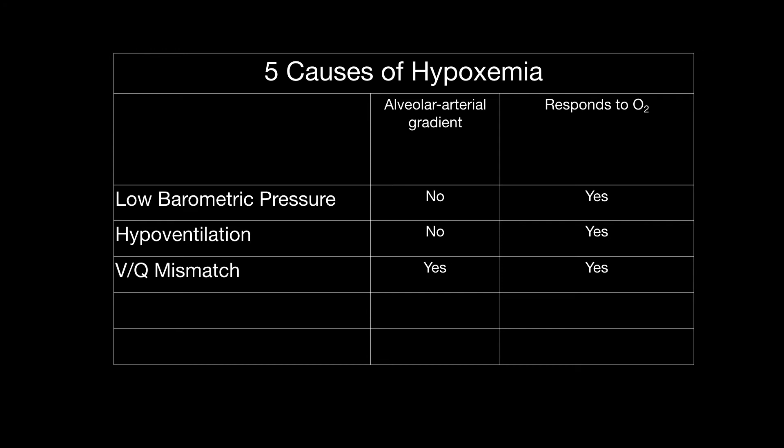The third cause of hypoxemia is VQ mismatch, and this is by far the most common cause of hypoxemia we see in the ICU. The problem with VQ mismatch is at the alveolar capillary unit: you have more blood flow crossing the unit than you have ventilation. Because of this, the blood enters the alveolar capillary unit hypoxemic and leaves still hypoxemic. But it will respond to oxygen because increasing the fraction of inspired oxygen increases the partial pressure of oxygen in the alveoli, compensating for the inadequate ventilation.